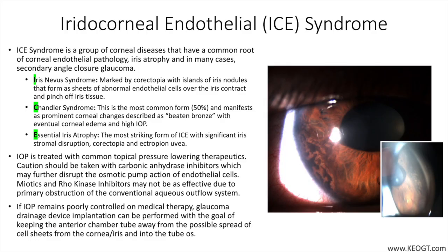ICE Syndrome is a group of corneal diseases that have in common corneal endothelial pathology, iris atrophy, and in many cases, secondary angle closure glaucoma. The cause is not fully understood, but has been linked inconclusively to underlying viral infection with herpes simplex virus or Epstein-Barr virus. ICE Syndrome is unilateral, which is a key distinguishing feature in the differential diagnosis, and sporadic with increased prevalence in women between the ages of 20 and 50.